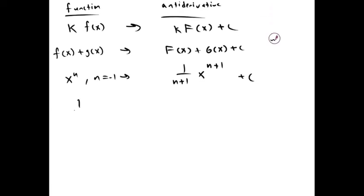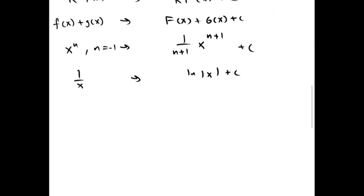If we have some exponential a to the bx, its antiderivative is 1 over ln a times 1 over b, a to the bx plus c.